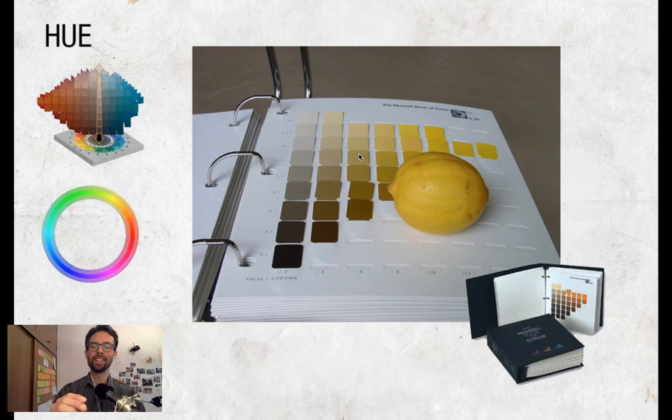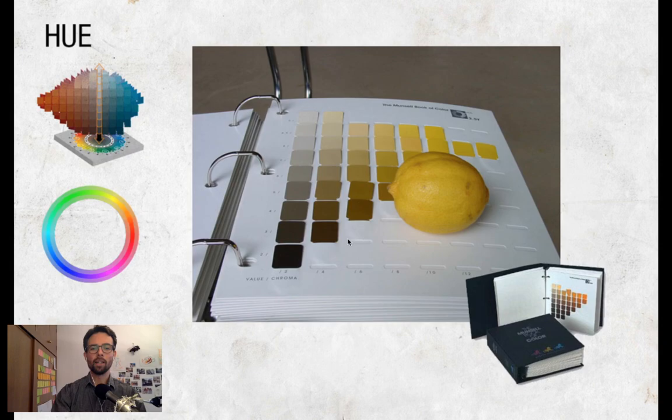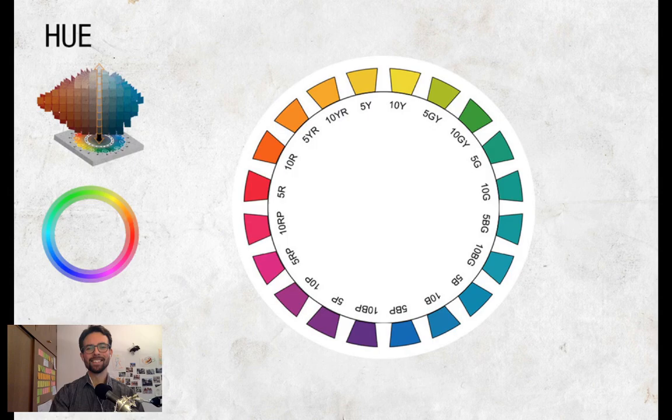Some colors are just not possible — like a super high chroma but very very dark yellow does not exist. I don't know if we just can't perceive it or if it physically doesn't exist, but I think with the wavelengths it physically doesn't exist — it either shifts to a different hue or there's not enough light to propagate the color.